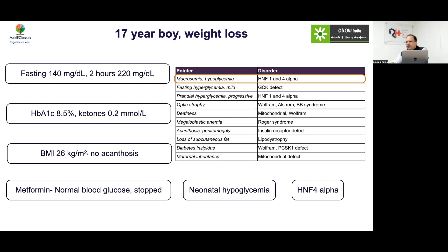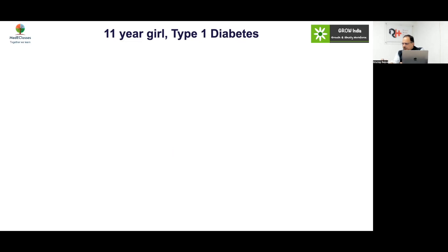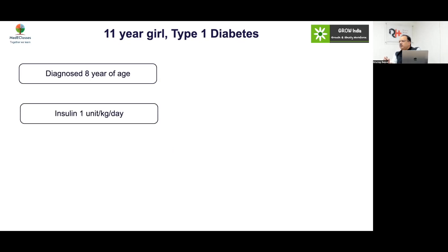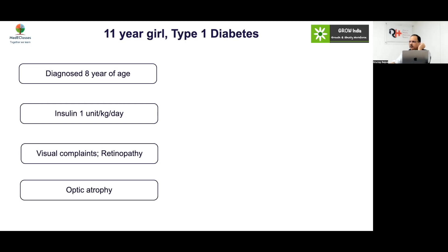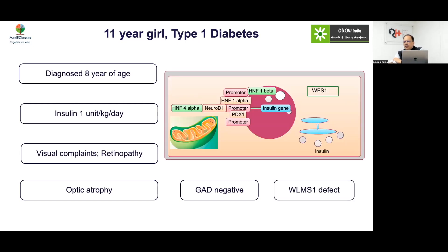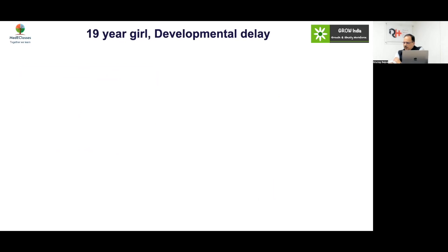Case: An 11-year-old girl diagnosed with type 1 diabetes at 8 years, on 1 unit/kg/day of insulin, now presenting with visual complaints and early retinopathy. Early retinopathy in just 3 years should raise suspicion — this could actually be optic atrophy rather than true retinopathy. GAD antibody was negative, and a WFS1 defect (Wolfram syndrome) was identified.